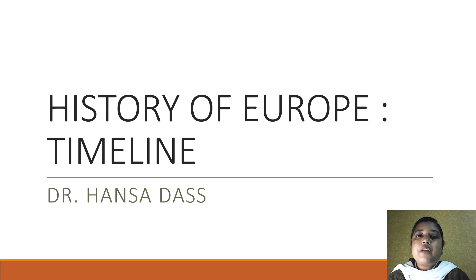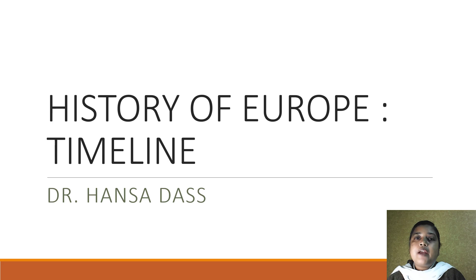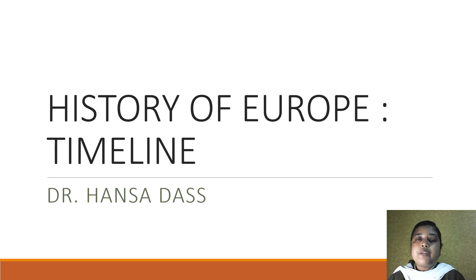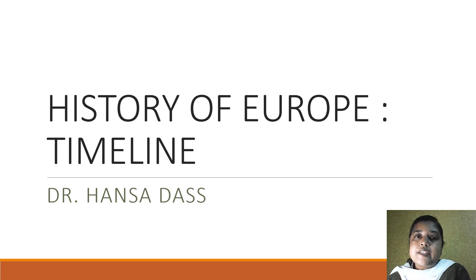Good morning and welcome to my channel History with Hansa. Today's video is going to be a very short video on the timeline of the history of Europe. If you have to understand the history of Europe, it is very essential to first understand the timeline — the ages or the periods into which European history has been divided — for a better understanding. We begin today with a discussion on the different ages and the various modes of production that existed during each age.